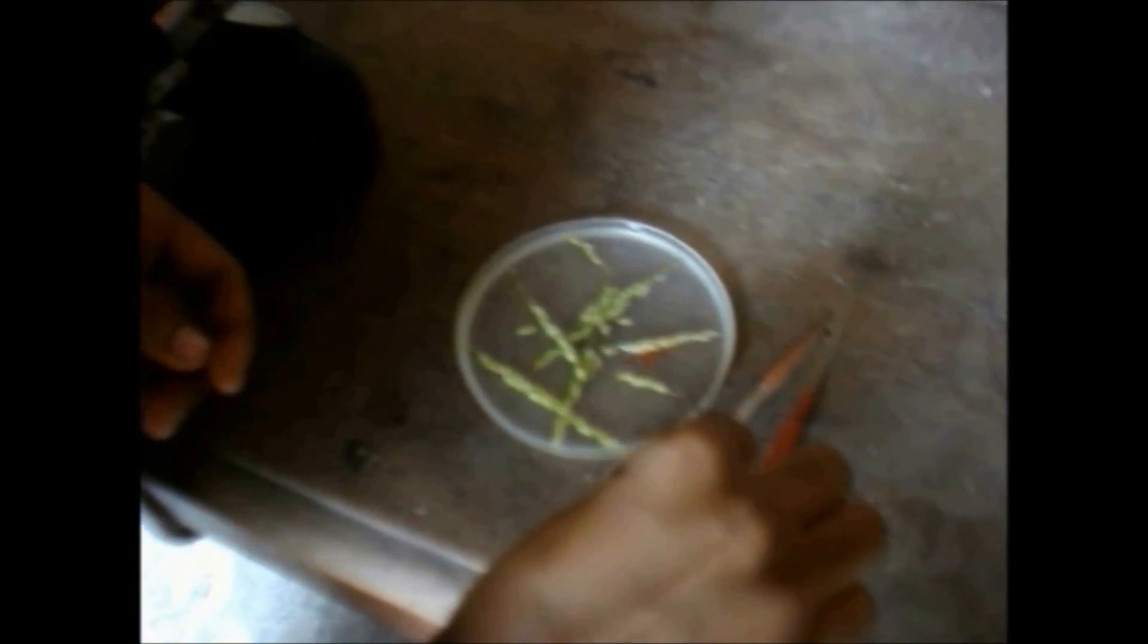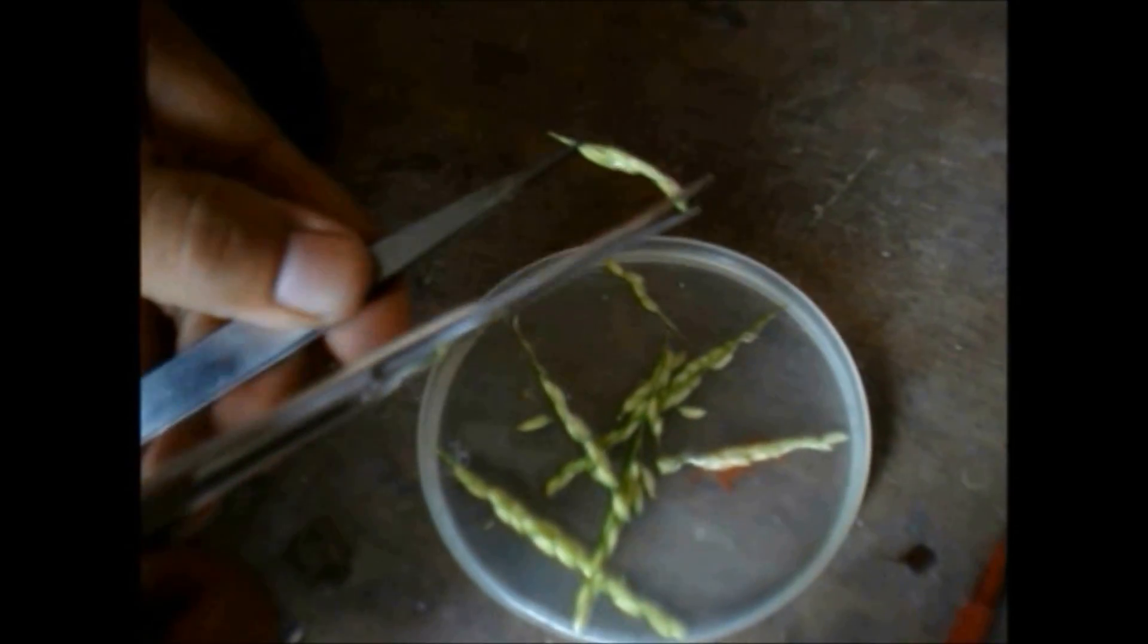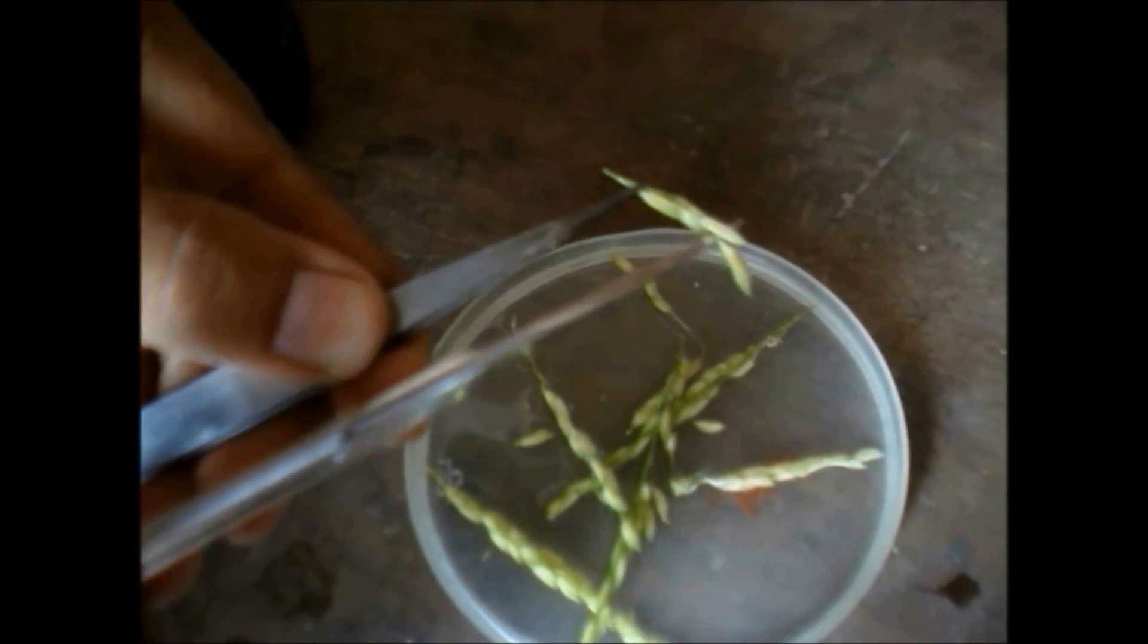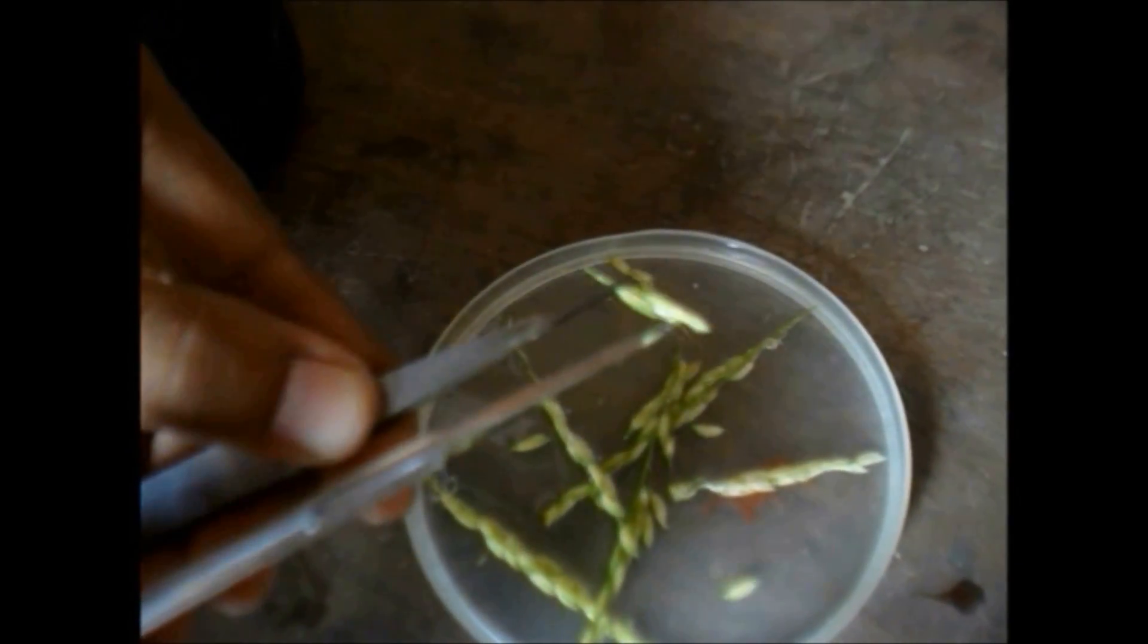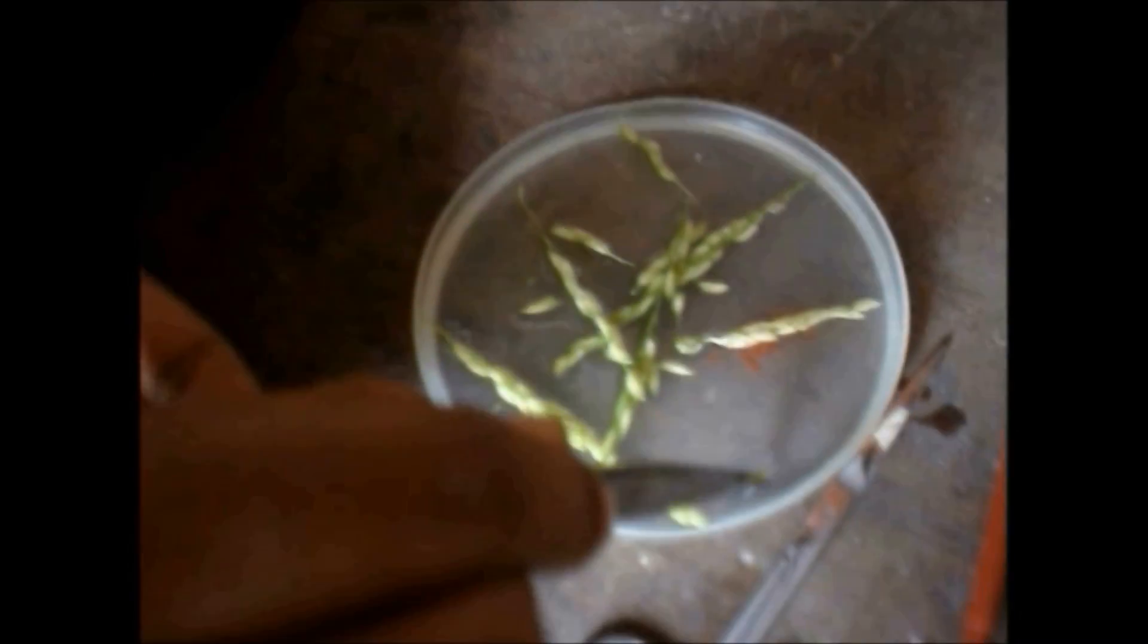After that, take a rice tiller from the petri dish and cut a single spikelet from it by using scissors. Forceps are used to handle the rice flower. Then, place a single spikelet on the slide.